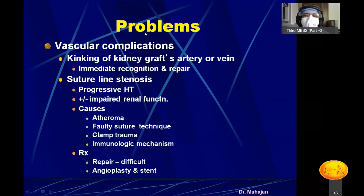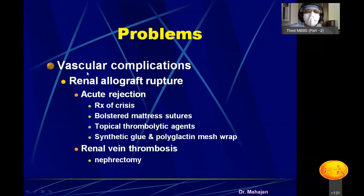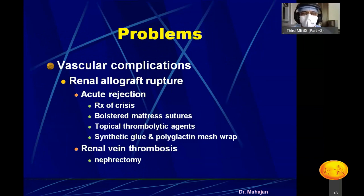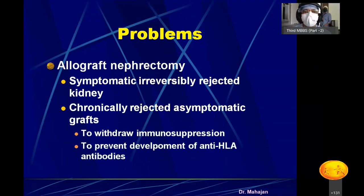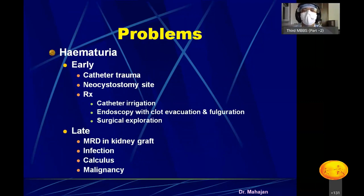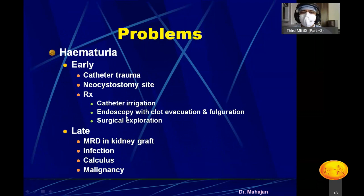Vascular complications include kinking of the kidney graft artery or vein, recognized intraoperatively and repaired, as well as suture stenosis of the artery or vein requiring immediate repair. Venous complications such as allograft rupture can occur due to renal vein obstruction — the kidney swells and graft nephrectomy must be performed. Hematuria can be early or late: early hematuria is due to catheter trauma or the urethroneocystostomy site, treated with irrigation, endoscopy, clot evacuation, or surgical revision.